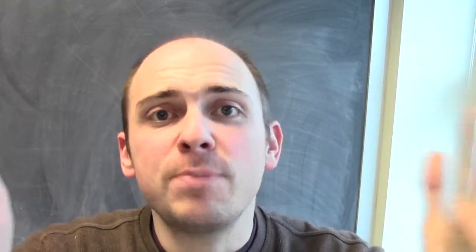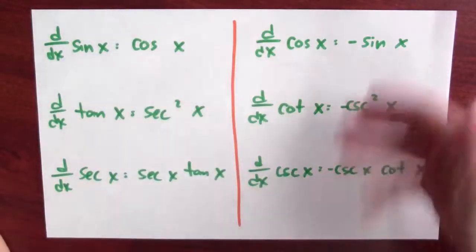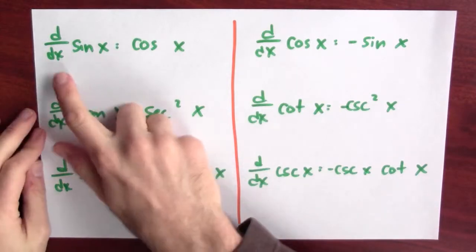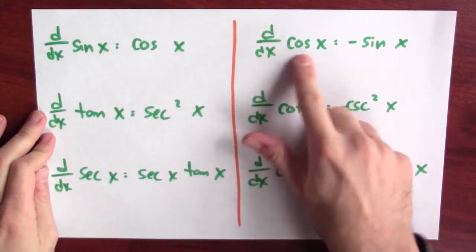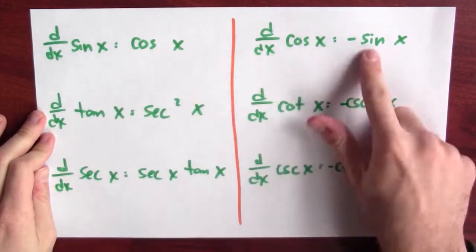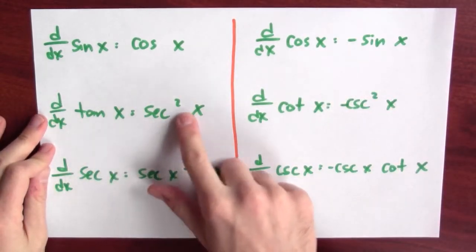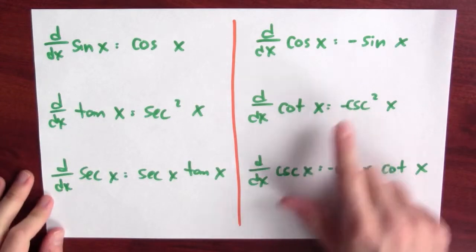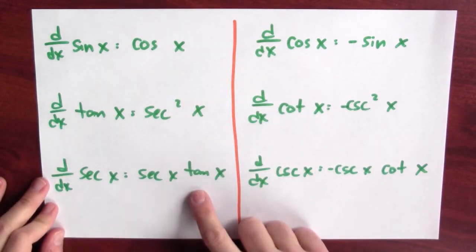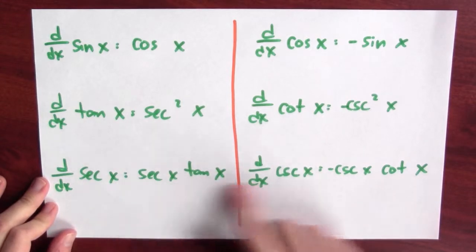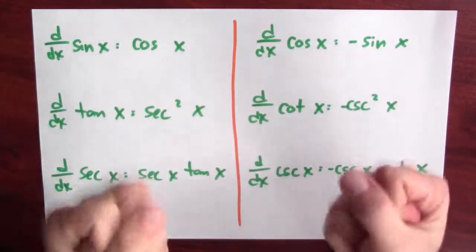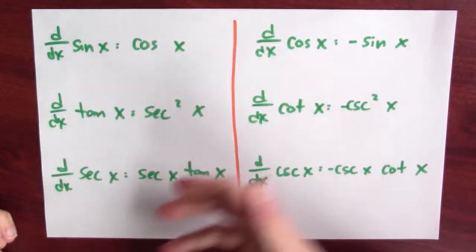Now that we've seen the derivatives of all six trig functions, here's a table showing all of them, and there are real patterns to notice. The derivative of sine is cosine; the derivative of cosine is -sine. The derivative of tangent is sec²; the derivative of cotangent is -csc². The derivative of secant is sec·tan, and the derivative of cosecant is -csc·cot. You can exploit this symmetry to help you remember these derivatives.